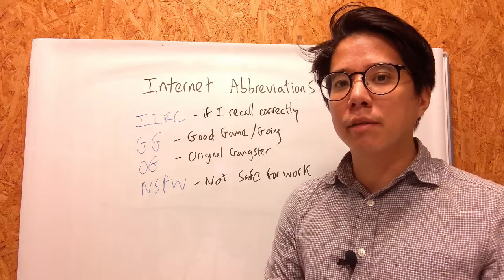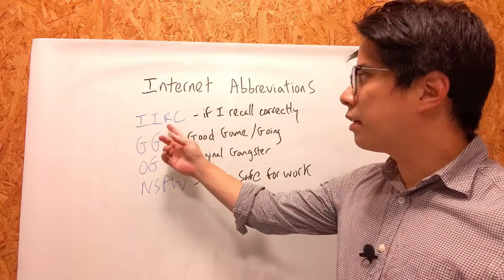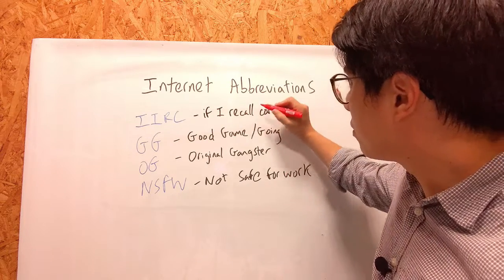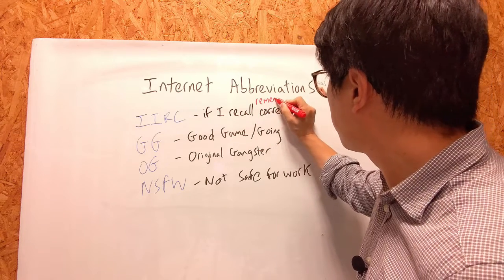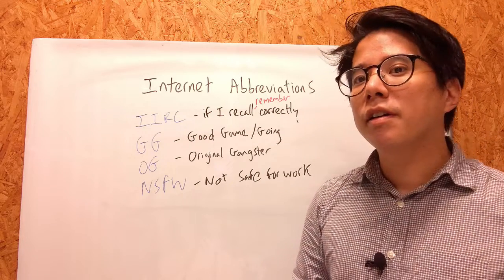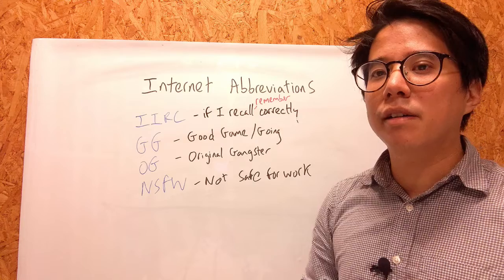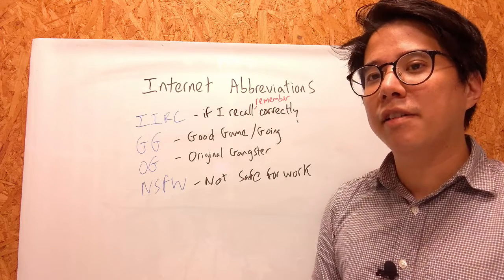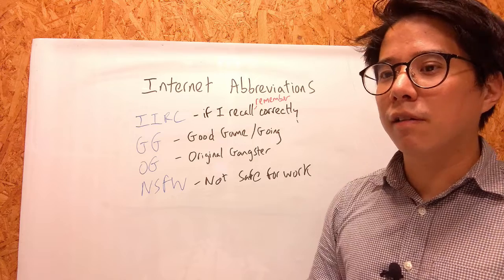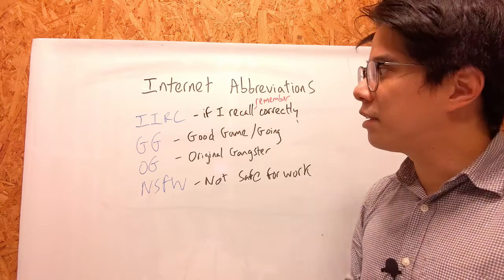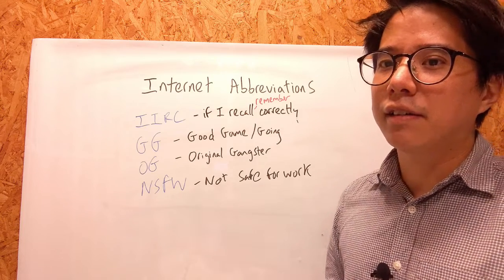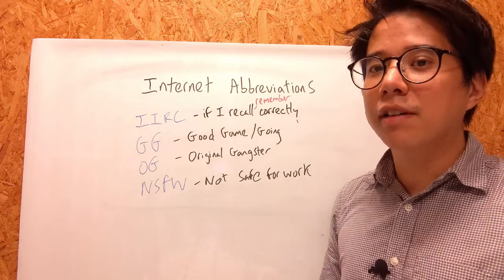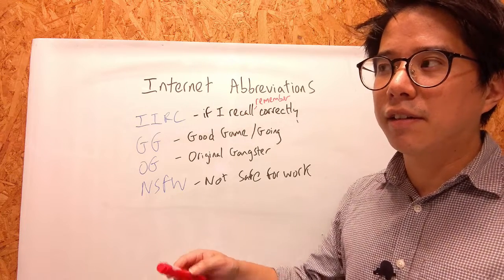Our next internet abbreviation is IIRC, which stands for if I recall correctly, or if I remember correctly. This is similar to AFAIK — as far as I know — and you use it when you're not 100% sure about what you're saying. For example, if someone asks do you know when Andy's birthday is, you can say IIRC, Friday — meaning if I recall correctly, it's on Friday. So when you're not 100% sure of something you're telling somebody, you can say IIRC followed by what you think.